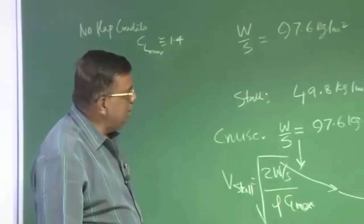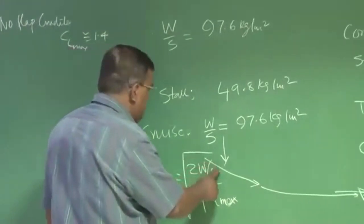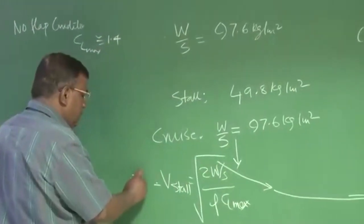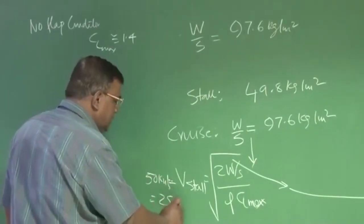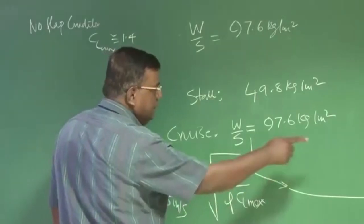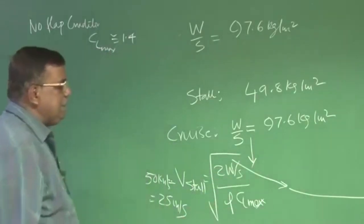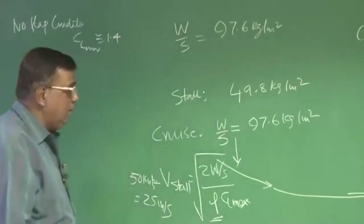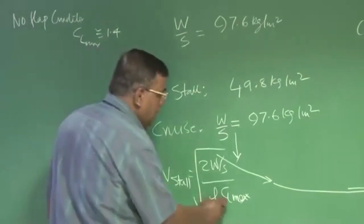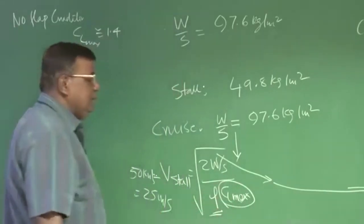But then, coming back here, if W by S has increased, but still you want to keep 50 knots or around 25 meter per second, and keeping W by S as 97.6 kg per meter square, density remains same place you are taking off.